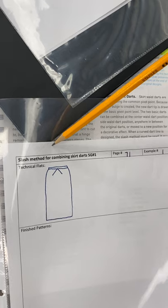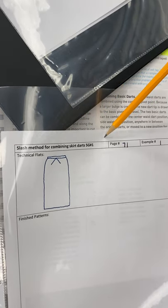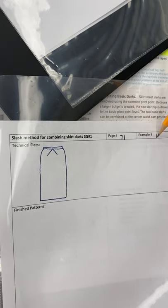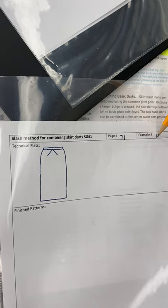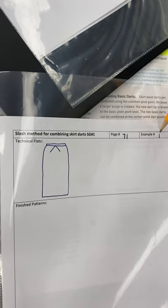Okay, up here, I've already told you what method it's going to be, what you're going to figure out what page it is and what example it is, because this will change depending on what your aesthetic is. What if we're using the slash method, we're combining darts, but you decide to do it on a male pant instead of a skirt? Then it would be a different page number, different example number.